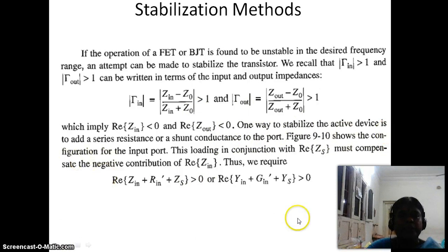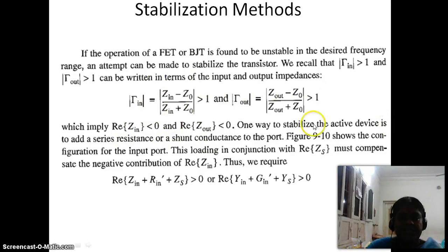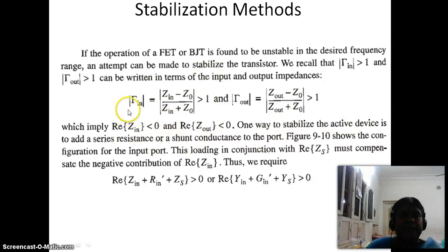The method to stabilize the active device is as follows. Suppose the real part of Zn is less than 0. For example, if Zn is minus 50 ohm, then gamma_n equals (minus 50 minus 20) by (minus 50 plus 20), which is minus 70 by minus 30, giving approximately 2-point-something, which is greater than 1. So if the real part of Zn is less than 0, gamma_n will be greater than 1, and we will reach the condition of instability.